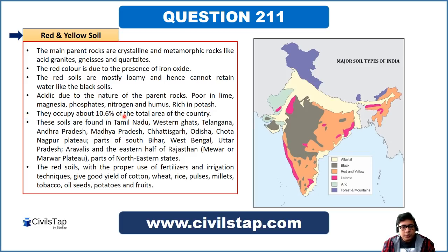Red and yellow soils occupy about 10.6% of total land area and are found in Tamil Nadu, Western Ghats, Telangana, Andhra Pradesh, Madhya Pradesh, Chhattisgarh, Odisha, Chota Nagpur Plateau (Jharkhand), parts of South Bihar, West Bengal, Uttar Pradesh, Aravallis, eastern Rajasthan, and northeastern states. These soils are abundant on the eastern side of the Deccan Plateau and in South India.